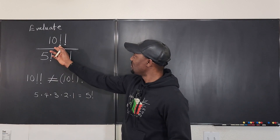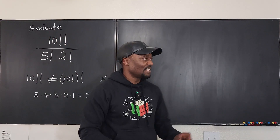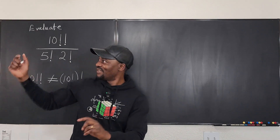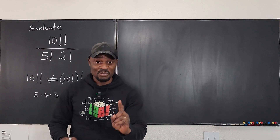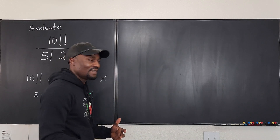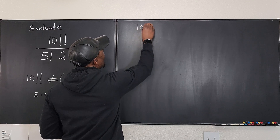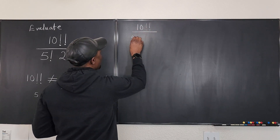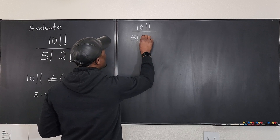So what would this expression be if we try to simplify it? Let's do it here, and then I'm going to show you the secret to the double factorial when the number is even — an even shorter way to write it. We have 10 double factorial divided by 5 factorial times 2 factorial.